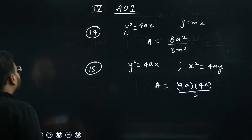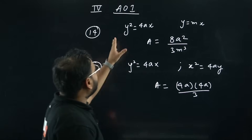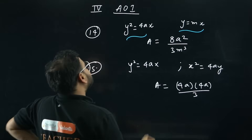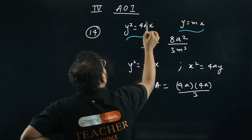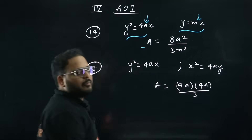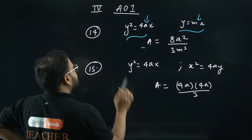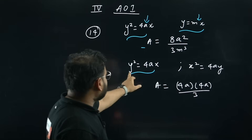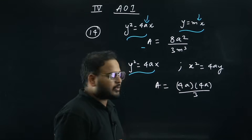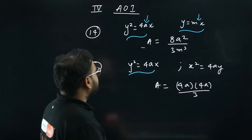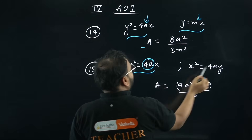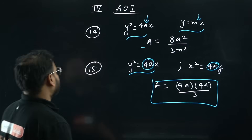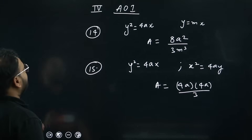Trick 14 — Area Under Curves: If you have a parabola and a line, the area between them is 8a²/(3m³) — find 'a' from the parabola and 'm' from the line. Trick 15: For the area between two parabolas (one horizontal, one vertical, symmetric), the area equals (4a · 4a)/3 = 16a²/3. That completes all 15 tricks.